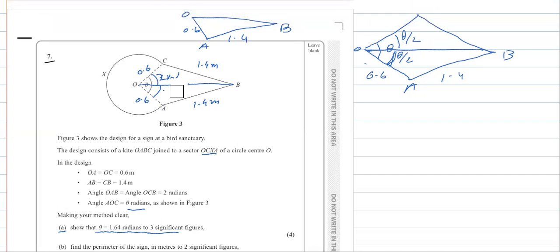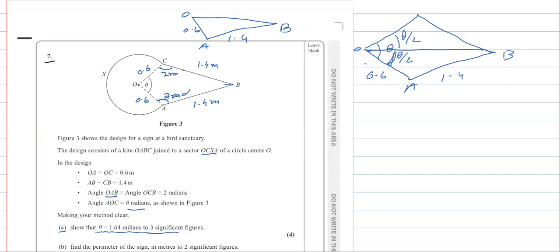Actually, in the question, I was confused. Having looked carefully, this angle OAB is given as 2 radians. In the kite, theta over 2 appears on each half. Since OAB = 2 radians and the total angle at O is theta, this angle at O will be theta over 2.